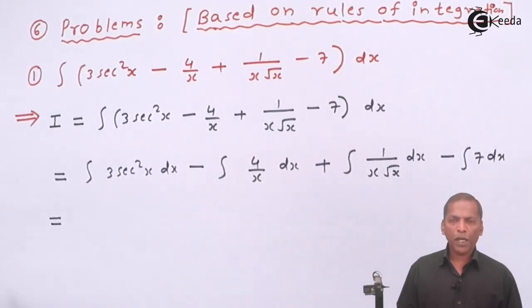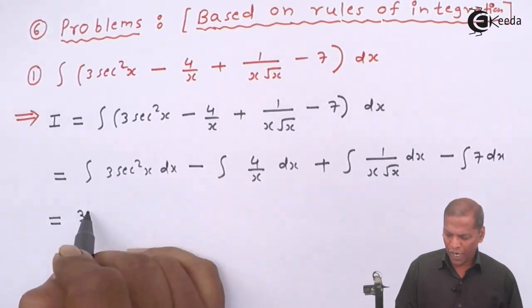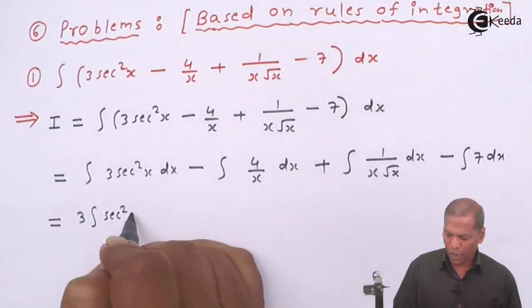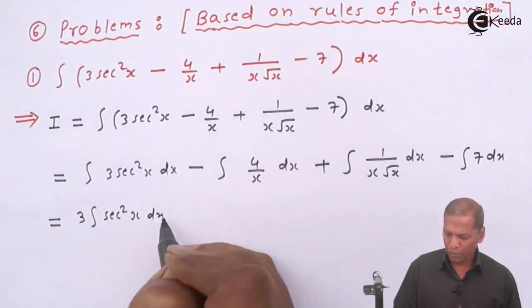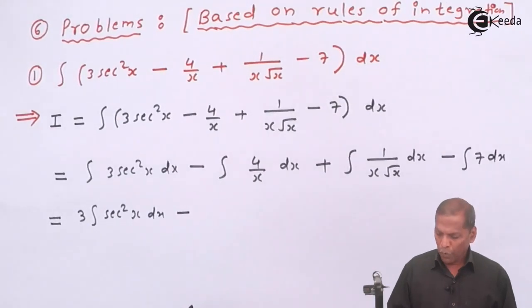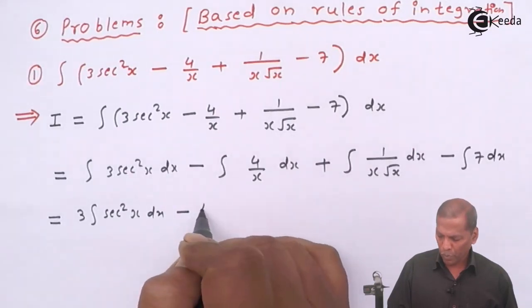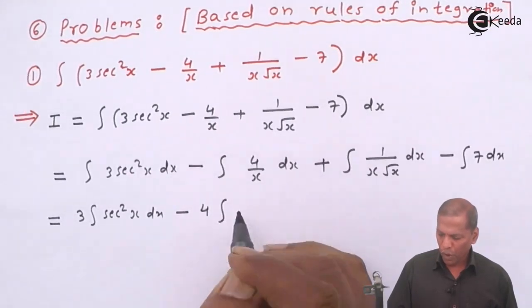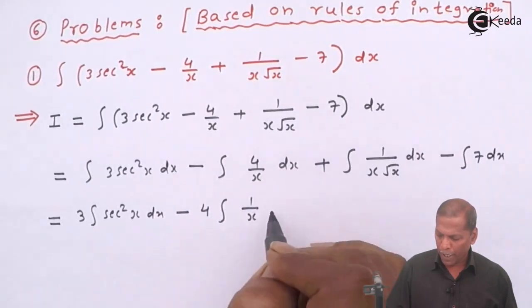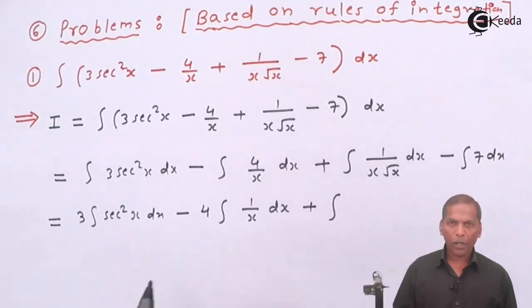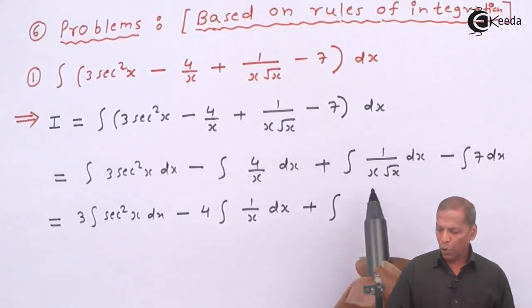Now in first integral 3 is a constant term, so we take outside the integral side. Therefore, we write 3 into integral of sec square x dx minus. We take 4 common from second integration. So 4 integral 1 upon x into dx plus integral, now x into root x.